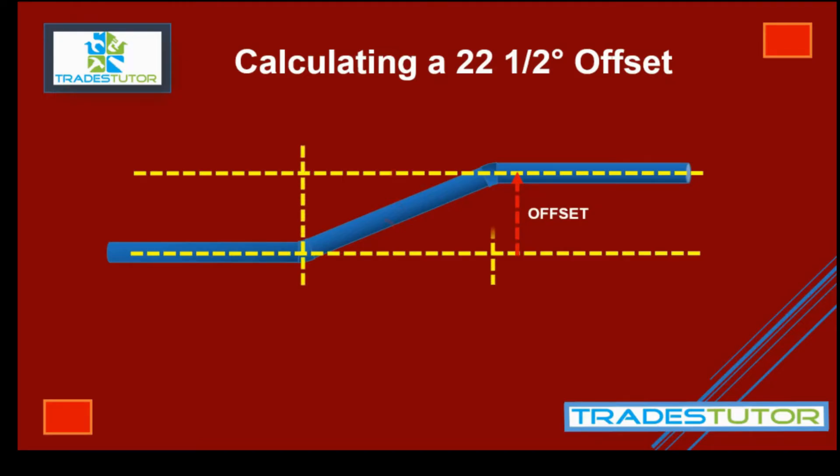Now, if we draw two other lines there from the beginning of the offset to the ending of the offset, we call that the advance. And then the piece that we're going to cut, that's called the travel. So those are our three sides, our three parameters that we're going to work with.